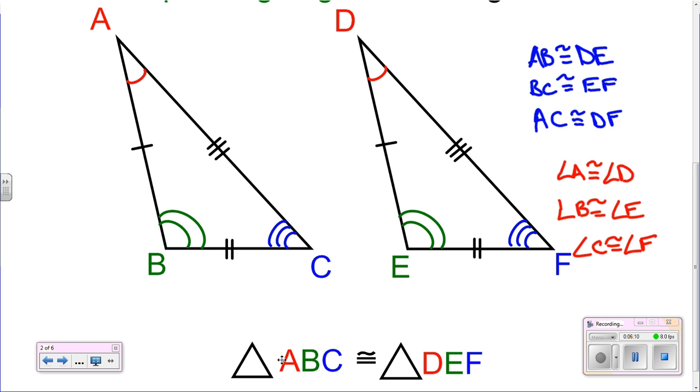By the same token, AB, that's the first two, is the same as DE, the first two back here. BC, the second two, is the same as EF, and then AC and DF. So you see how the color coordination might help you. Get some colored pencils, some crayons, markers, whatever it is that you need, and it will help you to figure out which is congruent to which.